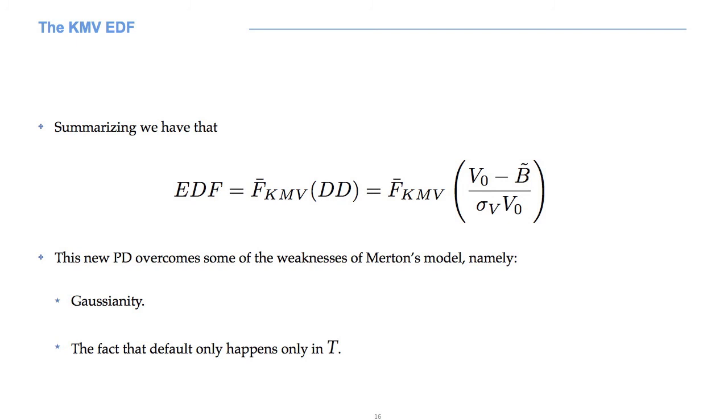In fact, now, thanks to B tilde, the possibility of defaulting within T is taken into consideration. Ok, let's now see some little graphics to better understand the KMV model as a whole.